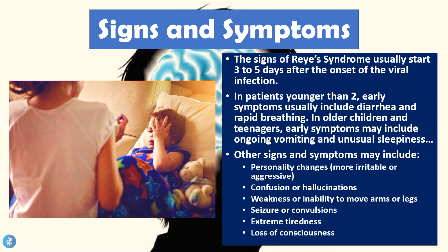The signs and symptoms of Reye's syndrome usually start three to five days after the onset of the viral infection. In patients younger than two, early symptoms usually include diarrhea and rapid breathing. In older children and teenagers, early symptoms may include ongoing vomiting and unusual sleepiness. Other signs and symptoms include personality changes — patients tend to be more irritable and aggressive — confusion, hallucinations, weakness or inability to move arms or legs, seizures, convulsions, extreme tiredness, and loss of consciousness, all due to cerebral edema.